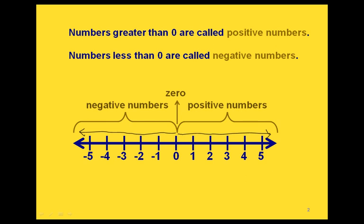The integers are all the numbers that you see here — the whole numbers out to the right and the negative whole numbers out to the left.